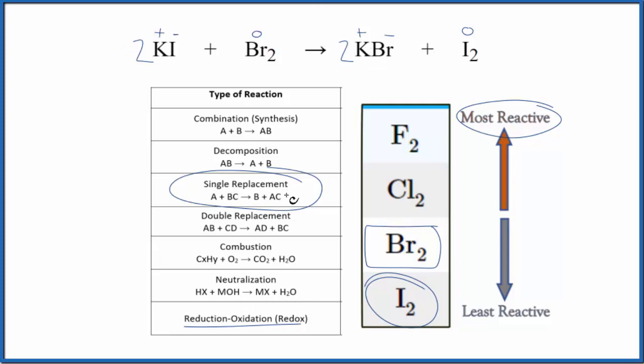So redox and single displacement. This is Dr. B with the type of reaction for KI plus Br2, potassium iodide plus bromine gas. Thanks for watching.